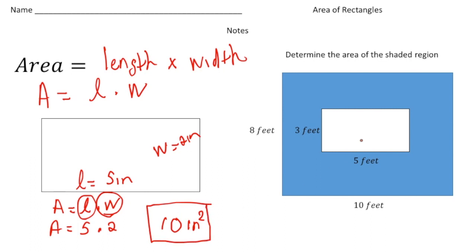So here we have another problem over here. It says determine the area of the shaded region. So we're really trying to find the area of the blue part of the shape. So notice we have two different rectangles. We have a big rectangle, which I'm going to highlight right here. We have a big one, and then inside we have a smaller one right here.